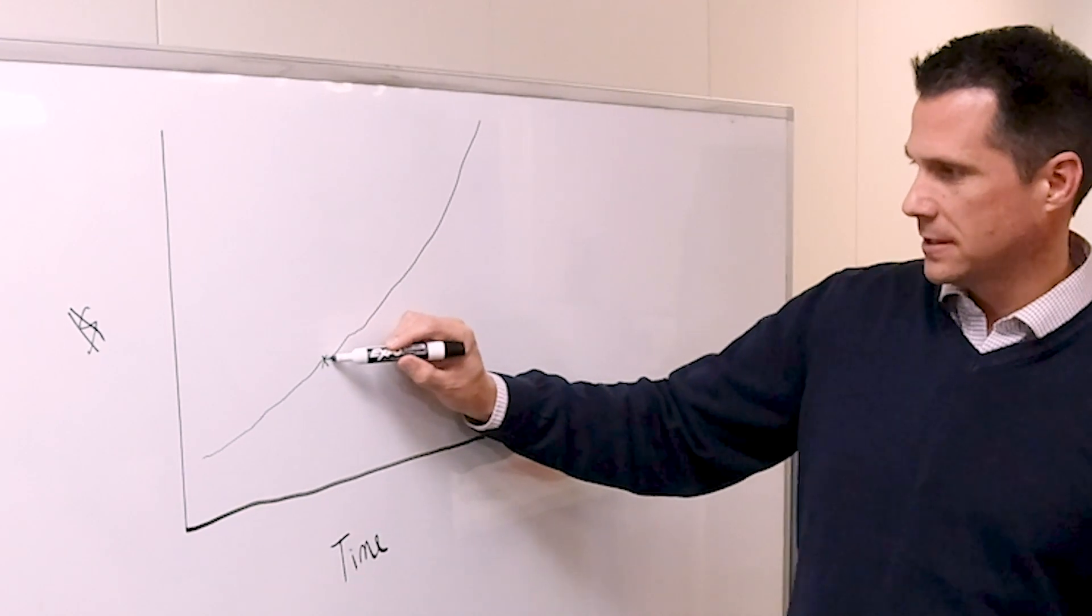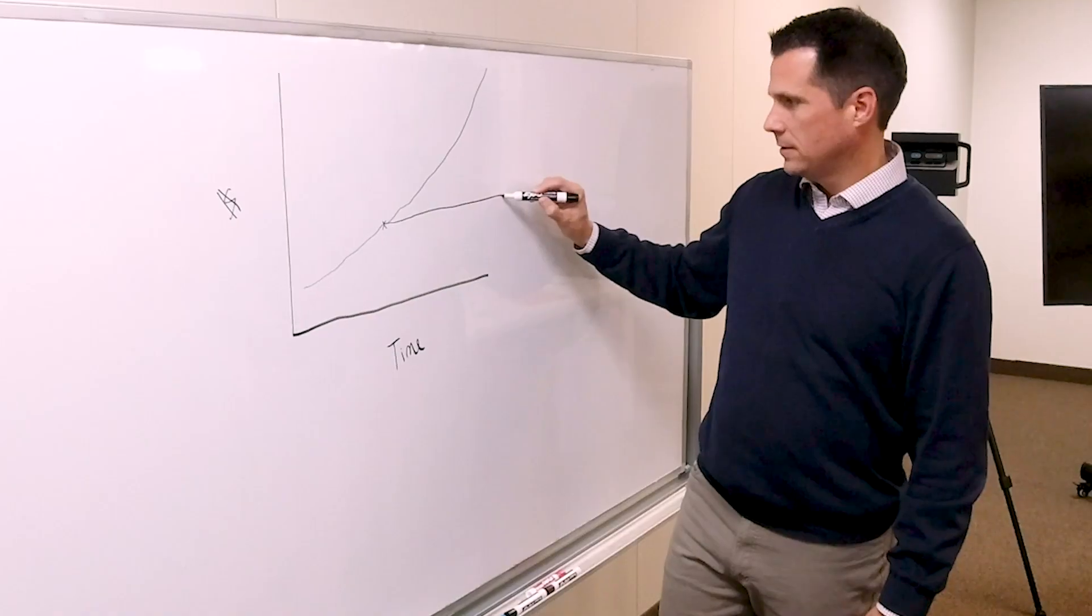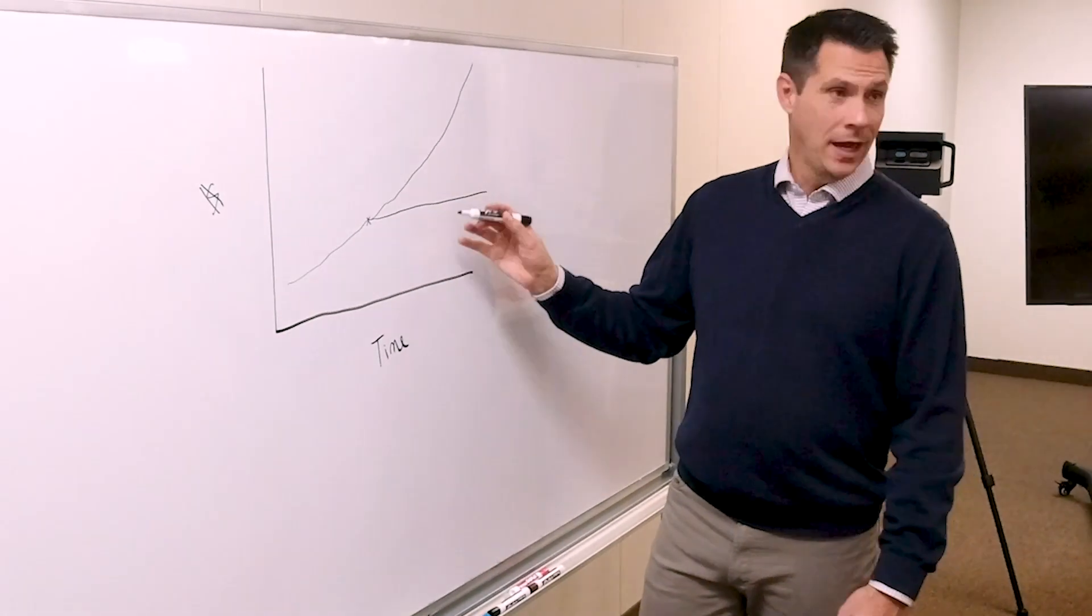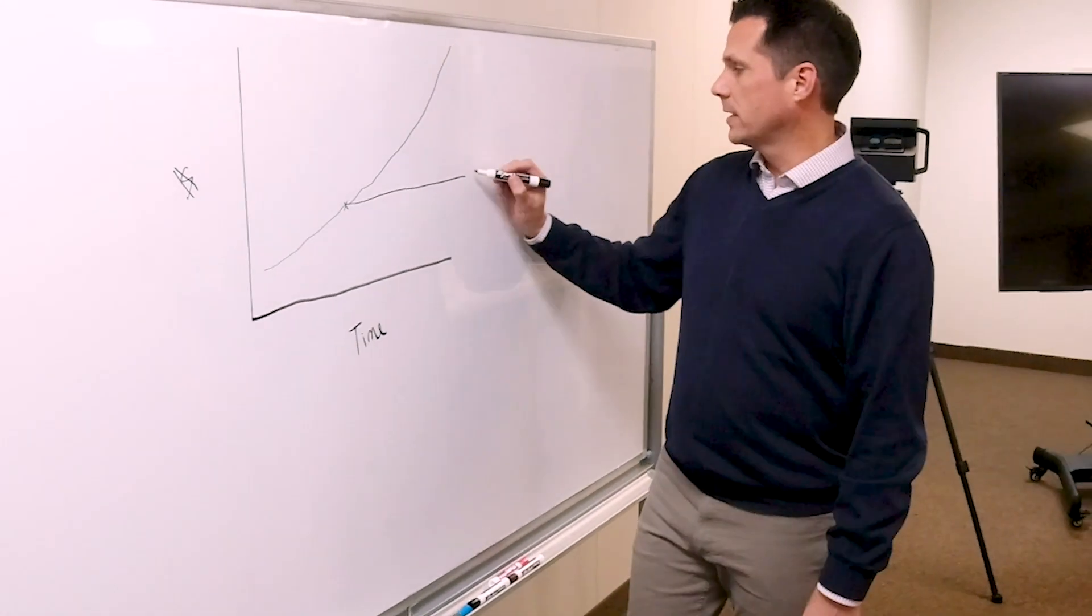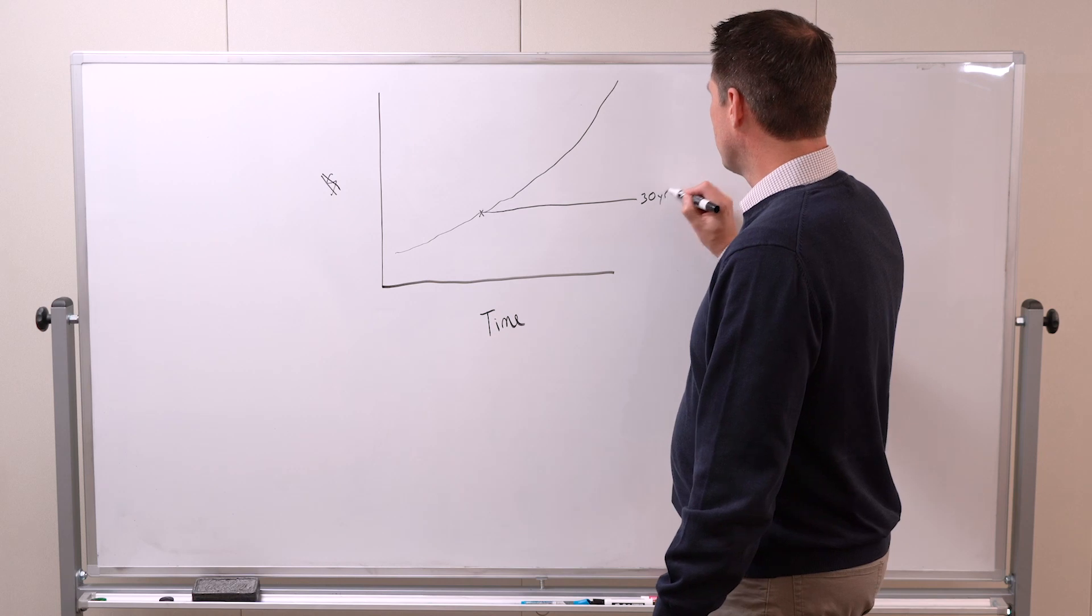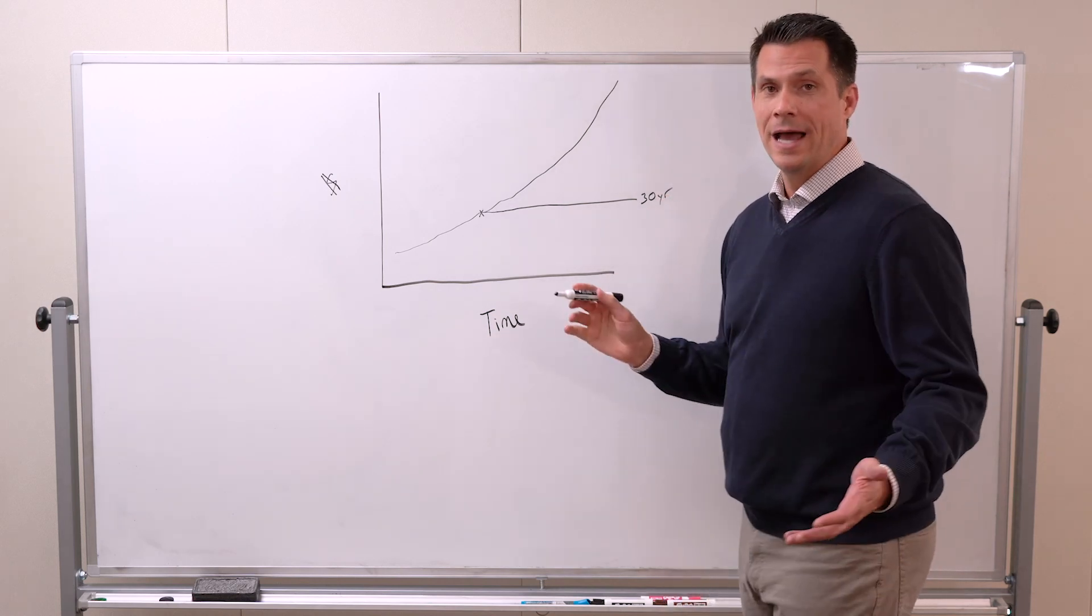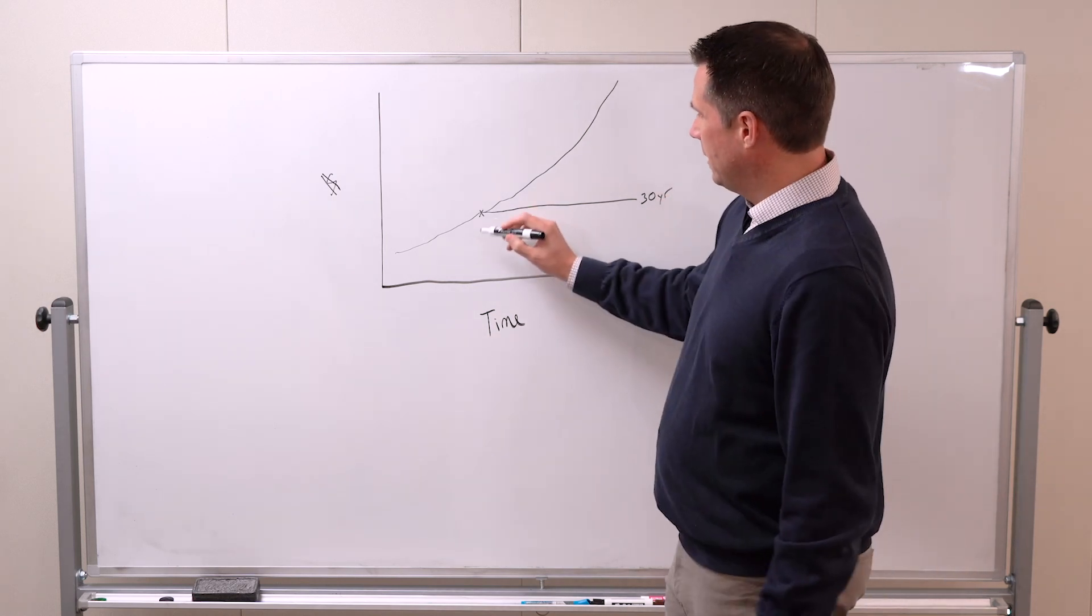What happens is this: you go flat. Your payment stops going up, and that's the beauty of a fixed-rate loan. Let's say it goes out for 30 years and your payment hasn't increased at all.